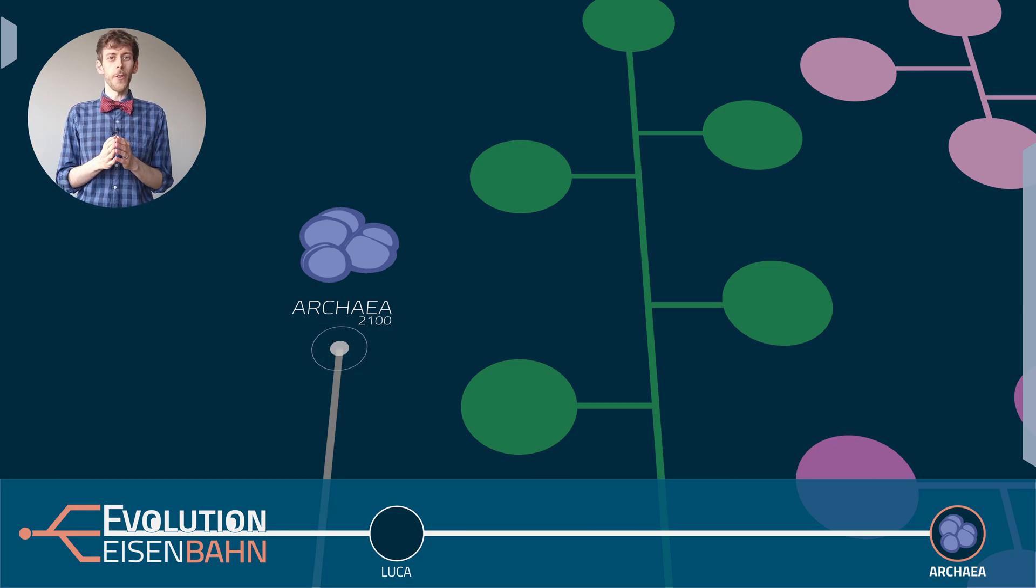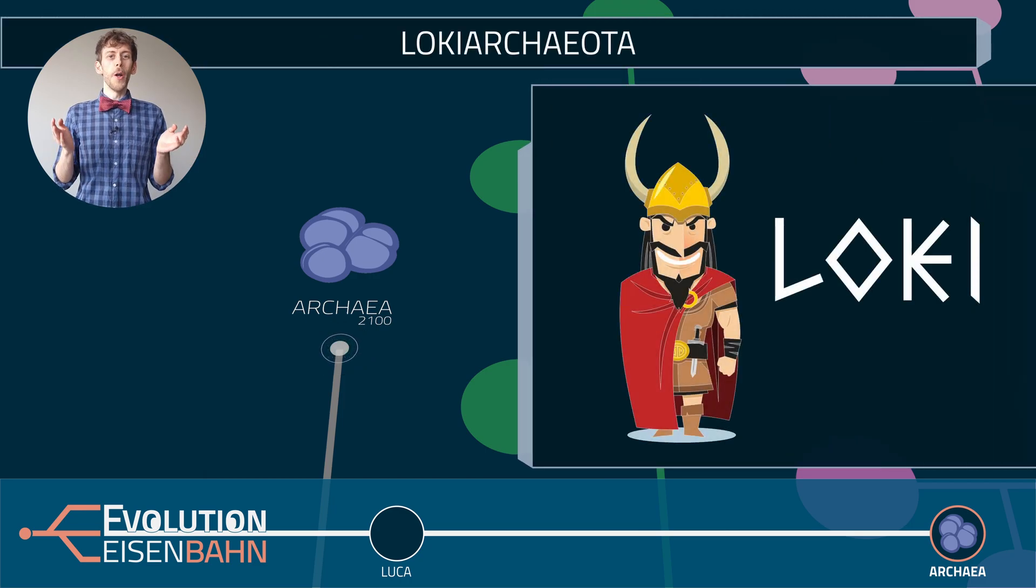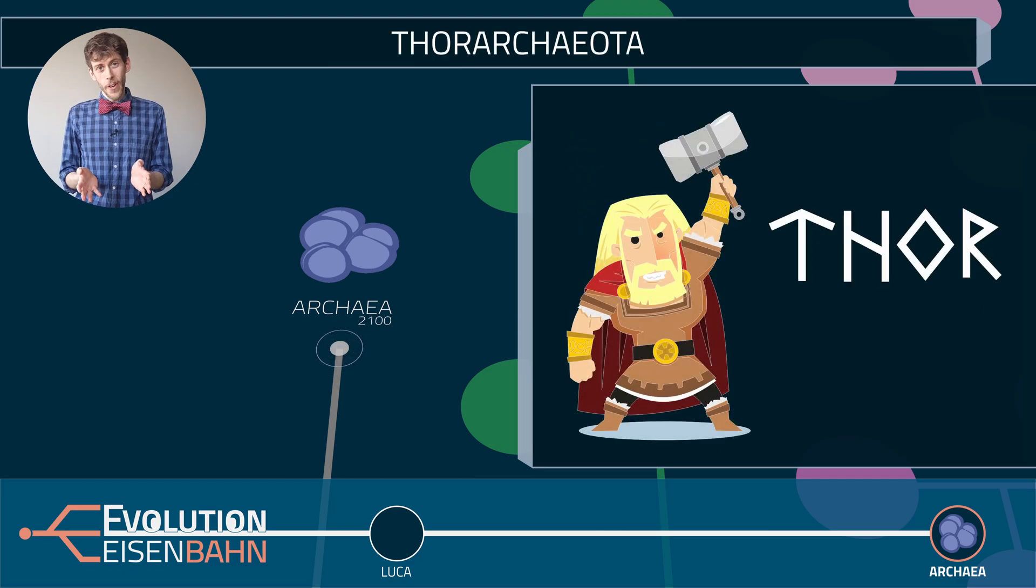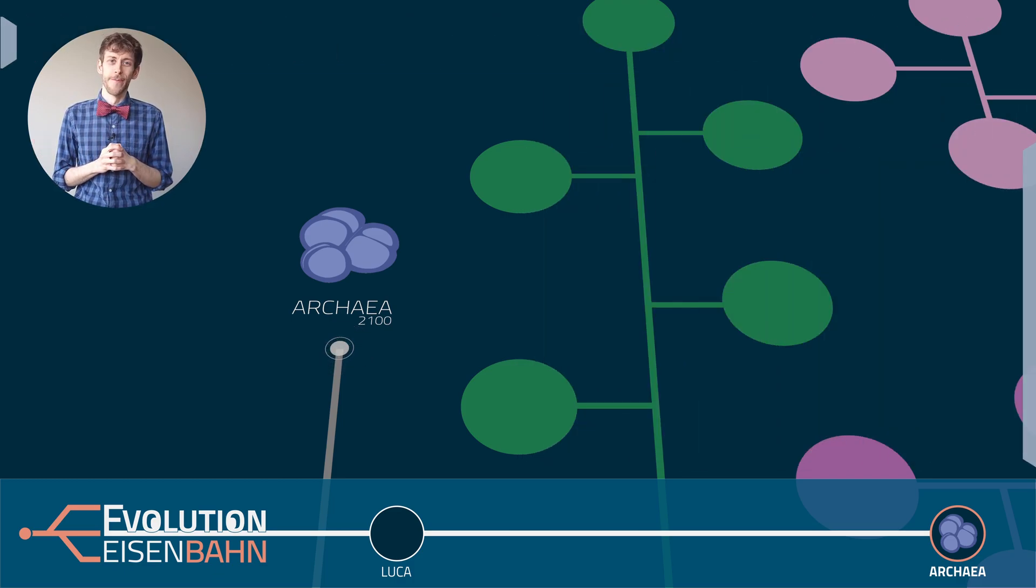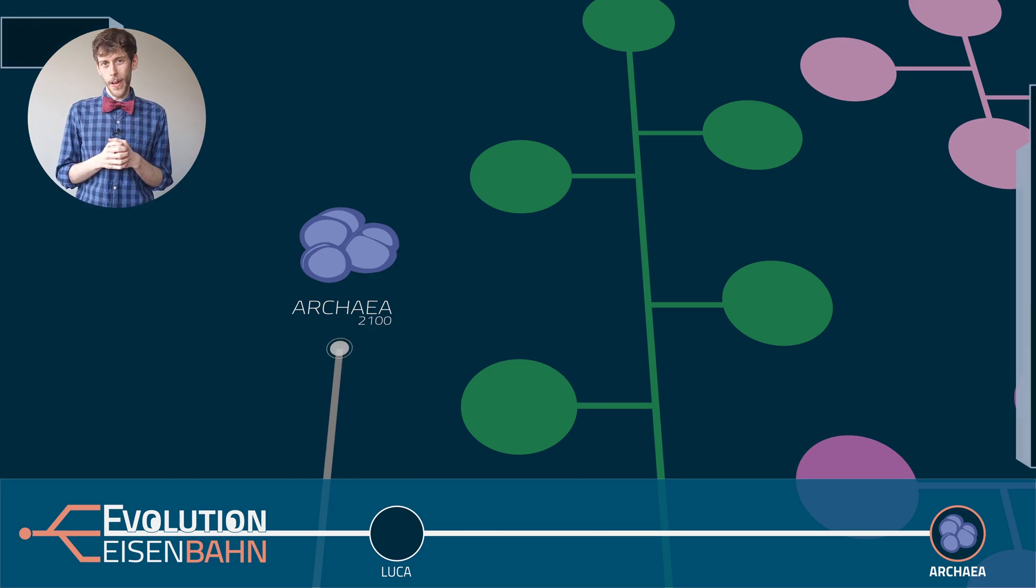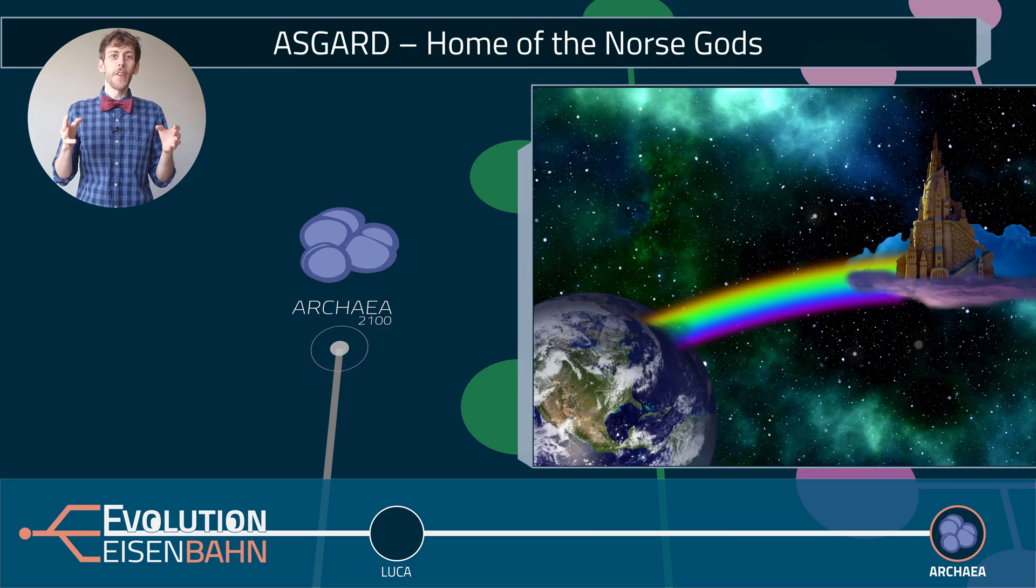And because these new archaea were so different from all the others we had found, they classified them as a new phylum, a new super group of archaea. And they named this new phylum Loki archaeota. Because nerds are just delightful like that. And of course, when they found other archaea elsewhere on the planet that were similar to the Loki archaeota, they called them Odin archaeota, Thor archaeota, Heimdall archaeota, and so on. Because nerds are delightful like that. All these guys have now been officially gathered under the superphylum called Asgard, by the way. Asgard as in the home of the gods in north mythology. So delightful.